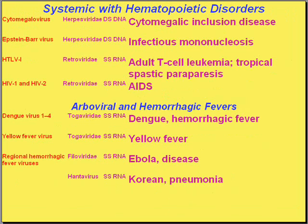We can also talk about the hematopoietic system. Cytomegalovirus, also in the herpes family, causes a wide variety of infections throughout the body — lung, kidneys — but it has a hematopoietic affinity as well. That's why it's classified here, but like the herpes virus in general, it's ubiquitous and can infect just about anything.